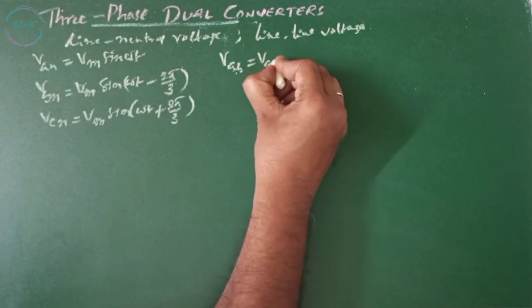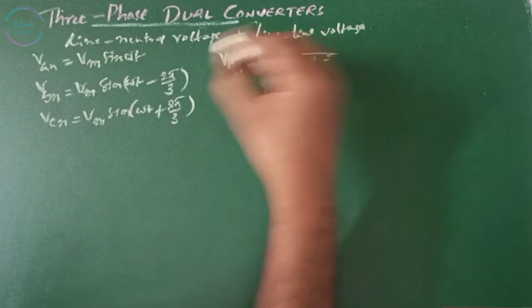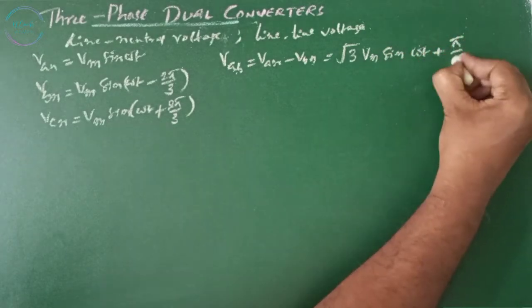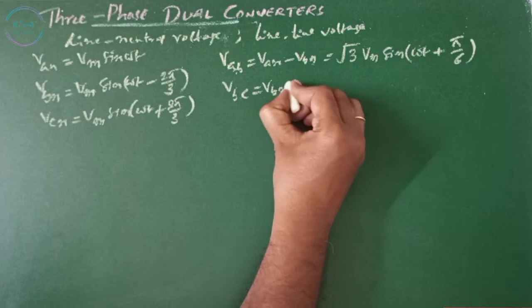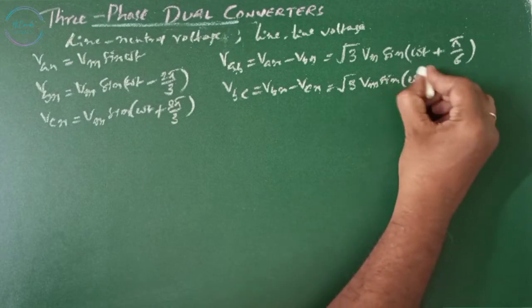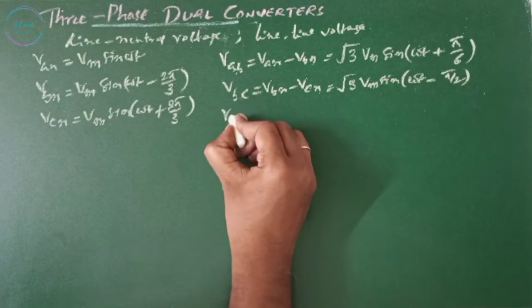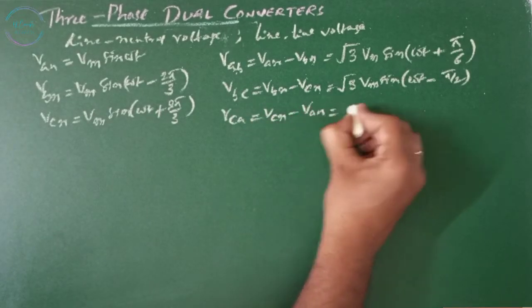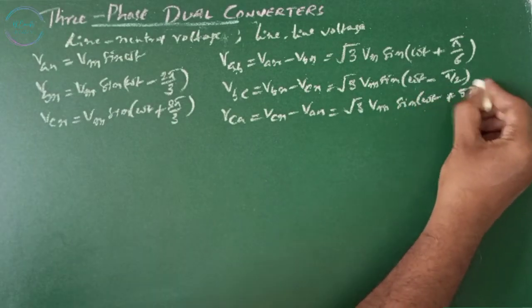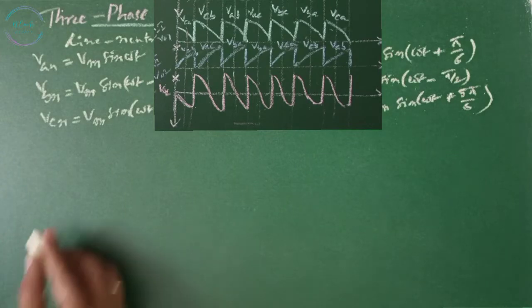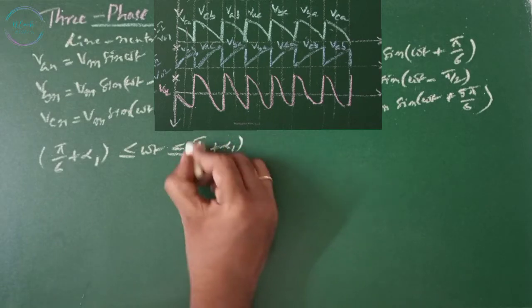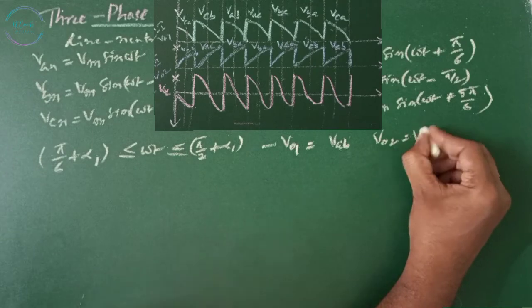VAB equals VAN minus VBN, which equals root 3 Vm sin(ωt plus 5π/6). VBC equals VBN minus VCN, which equals root 3 Vm sin(ωt plus 5π/6). From the waveforms we observe: 5π/6 plus alpha 1 ≤ ωt ≤ π/2 plus alpha 1, where V01 equals VAB and V0t equals VBC.